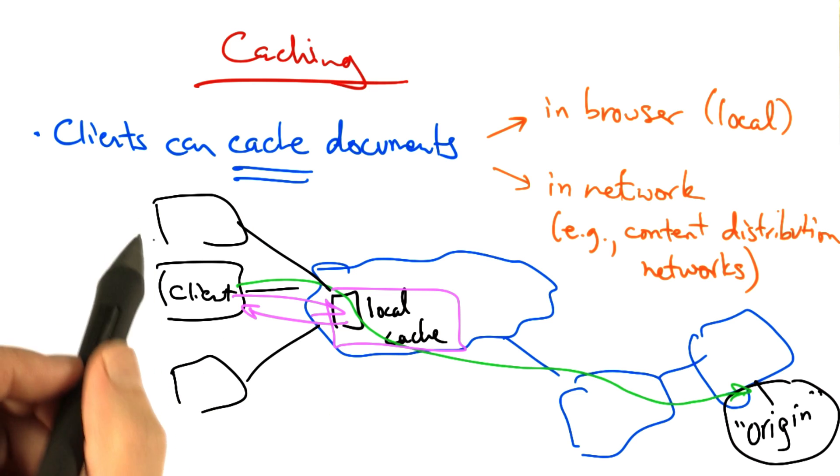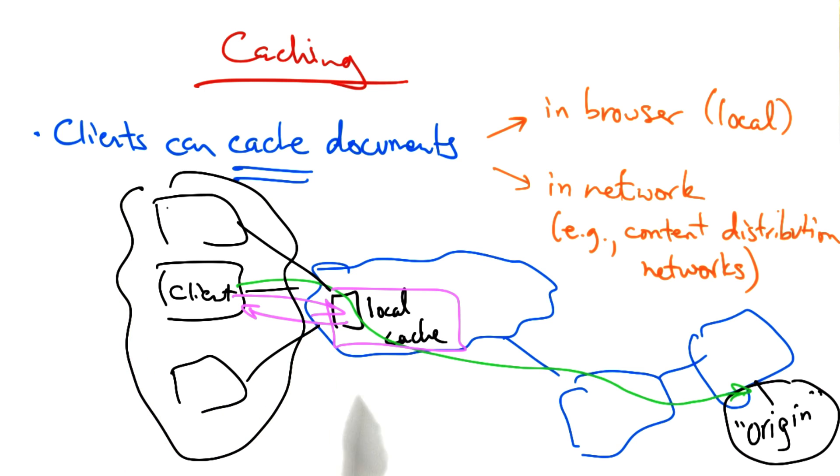Caching can also improve performance when multiple clients are requesting the same content. In this case, not only do all of the local clients benefit from the content being cached locally, but the ISP also saves costs on transit because it doesn't have to pay to keep transferring the same content over these expensive links. Instead, it can simply serve the content to the clients locally.